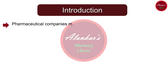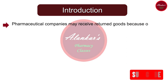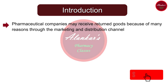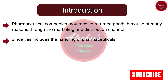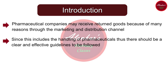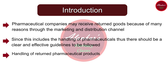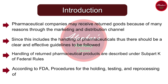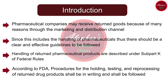Pharmaceutical companies may receive returned goods because of many reasons through the marketing and distribution channel. Since this includes the handling of pharmaceuticals, there should be a clear and effective guideline regarding the handling of returned products. The guidelines related to the handling of returned products are described under Subpart K of federal rules, and according to FDA, procedures for holding, testing, and reprocessing of returned drug products shall be in writing and shall be followed.